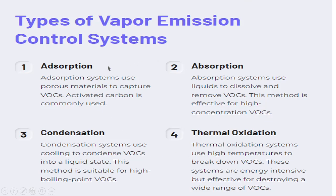There are different types of vapor emission control systems, but all work on four basic principles: first is adsorption, second is absorption, third is condensation, and fourth is thermal oxidation. In adsorption, we use a substance called activated carbon which acts as the absorbing media. In absorption, the process is used to dissolve and remove all the VOCs which are high in concentration. In condensation, we use a cooling process to condense the VOC.